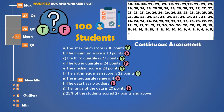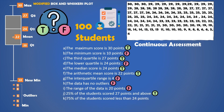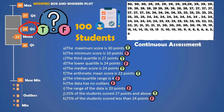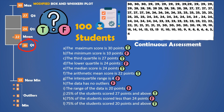25% of the students scored 27 points and above — this is correct. As with Q3, which is the third quartile, 25% of the data points will lie at or above the third quartile, which is 27. 75% of the students scored less than 24 points — this is also false, because 24 points is Q2, the median, and 50% of the students scored at or below the median. 75% of the students scored 20 points and above — this is true, as at the first quartile Q1, 75% of the data points will lie at or above this point.